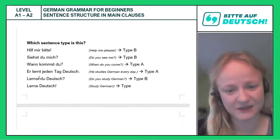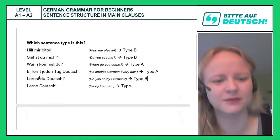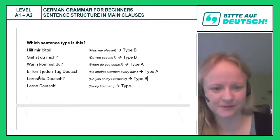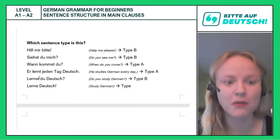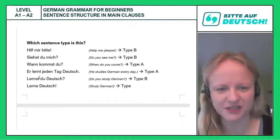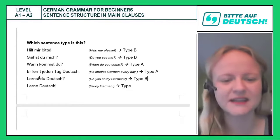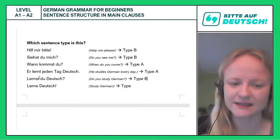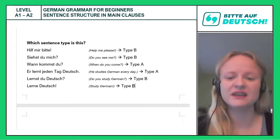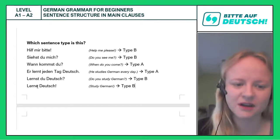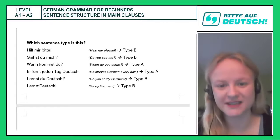And lastly, if his answer is no, we tell him: 'Lern Deutsch!' — 'Study German!' We are giving a command, so this is sentence type B as well, because we start the command with the verb in the first position of the sentence.